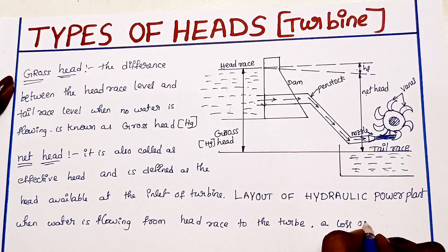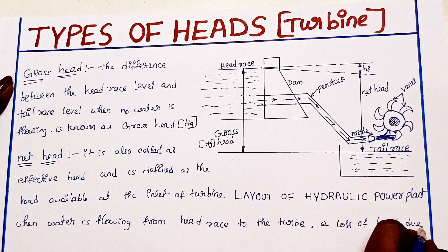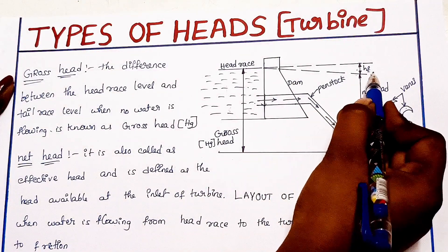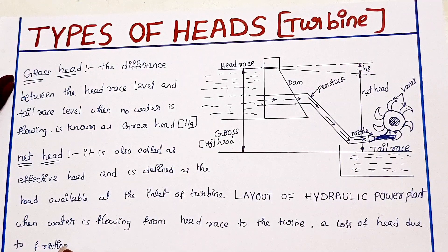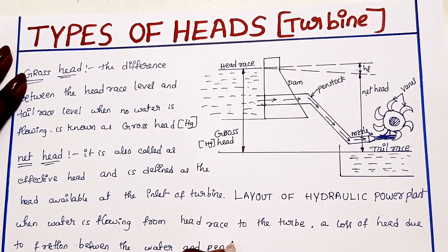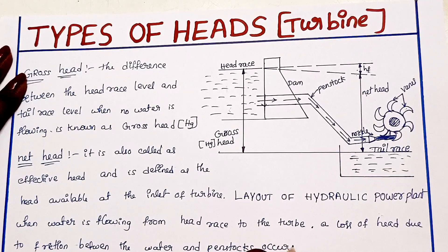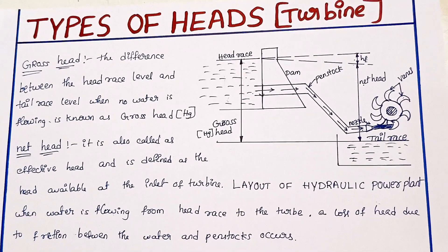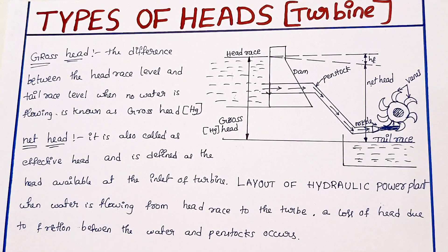When water flows from the headrace to the turbine, there is a loss of head due to friction, denoted as HF. This head loss due to friction occurs in the penstock — the large cylindrical pipe through which water flows. The head available at the turbine inlet after subtracting HF is the net head.